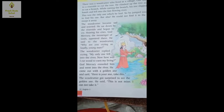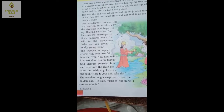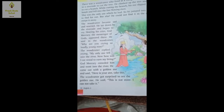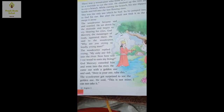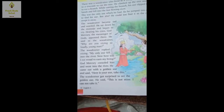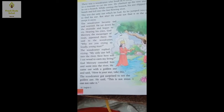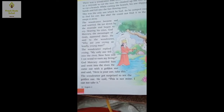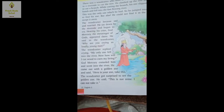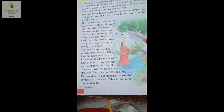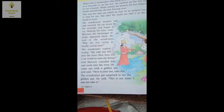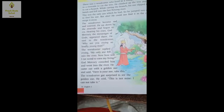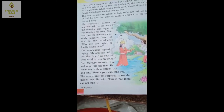The woodcutter became sad and worried. He sat down by the riverside and began to cry. Hearing his cry, God Mercury, the messenger of God, appeared there. He said to the woodcutter, 'Why are you crying so loudly, young man?' The woodcutter replied crying, 'My only axe fell into the river. Now how will I cut wood to earn my living?' God Mercury consoled him and went into the river. He came out with a golden axe and said, 'Here is your axe — take it.' The woodcutter was surprised and said, 'This is not mine. I cannot take it.'